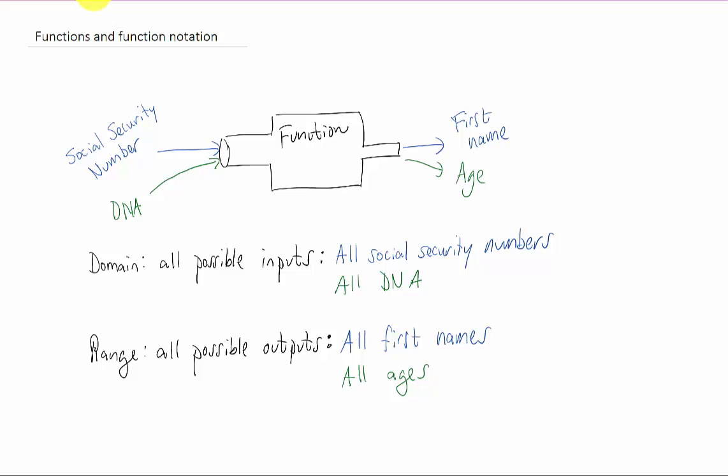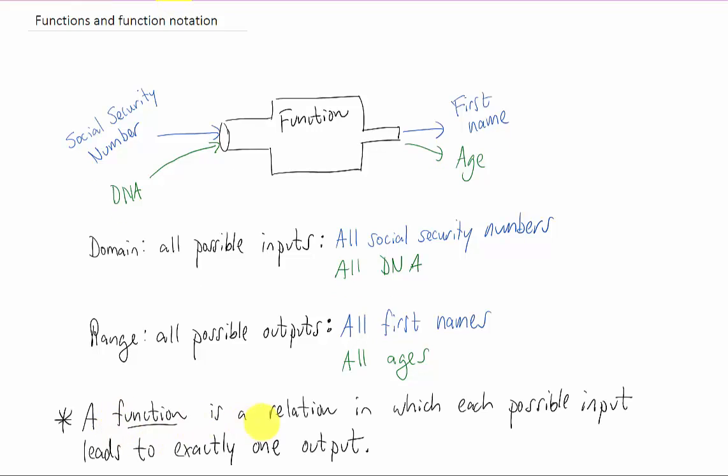Let's write down what the definition of a function is. A function is a relation in which each possible input leads to exactly one output. We have already discussed that each possible input has a name. We call it the domain. And all the outputs have a name as well. We call that the range.